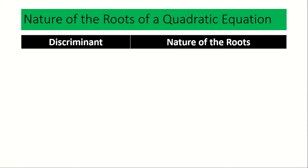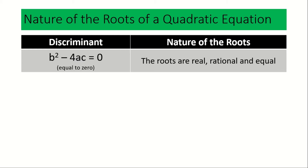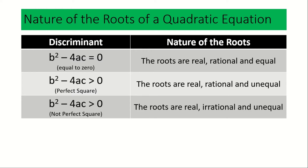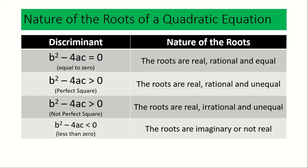The discriminant can be positive, zero, or negative, and this determines how many solutions there are to the given quadratic equation. If the discriminant b squared minus 4ac is equal to zero, then the roots are real, rational, and equal. If the discriminant b squared minus 4ac is greater than zero and a perfect square, the roots are real, rational, and unequal. And lastly, if the discriminant b squared minus 4ac is less than zero, that means the roots are imaginary or not real.